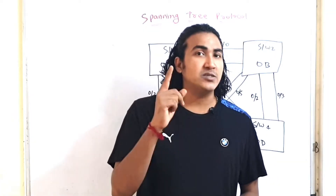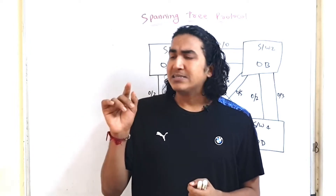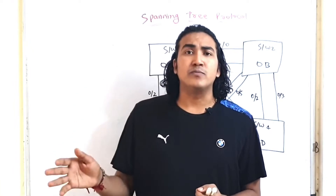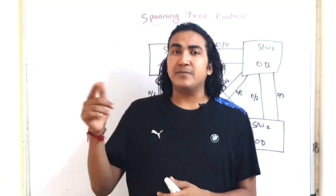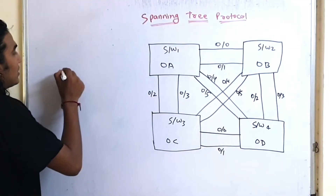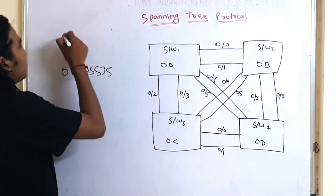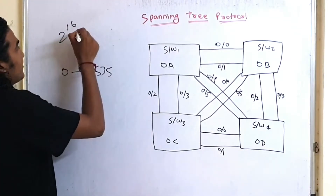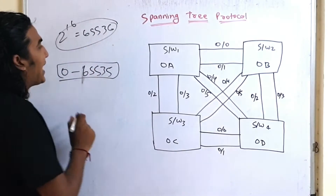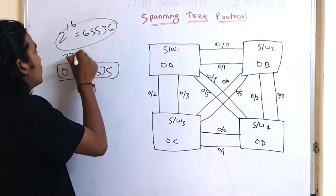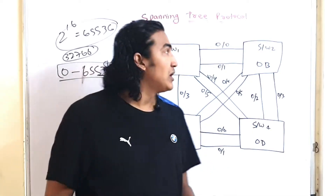The bridge ID is a combination of two things: priority and base MAC address. The MAC address is a 6-byte (48-bit) value, and the priority is a 2-byte (16-bit) value, so the range of priority can be from 0 to 65535. By default, the priority on switches is 32768.